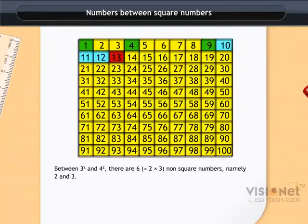Similarly, there are 6 non-square numbers between the two square numbers 9 and 16, 8 non-square numbers between the two square numbers 16 and 25, and so on.